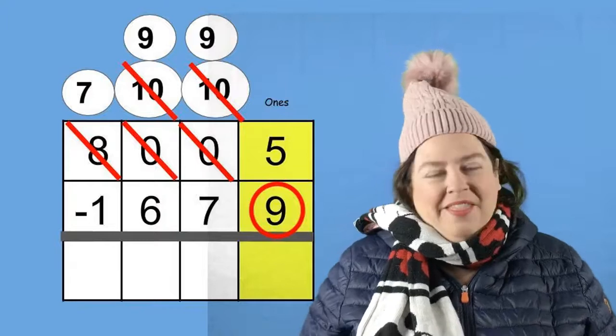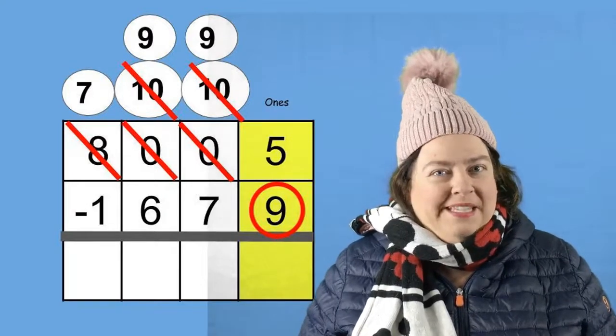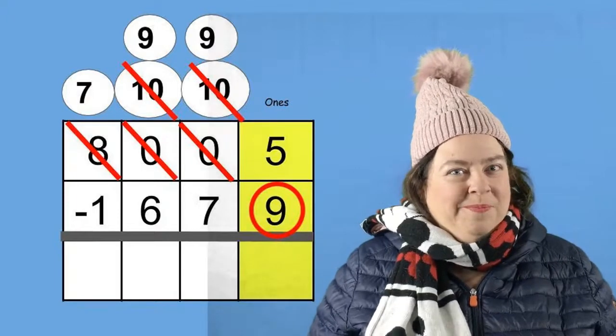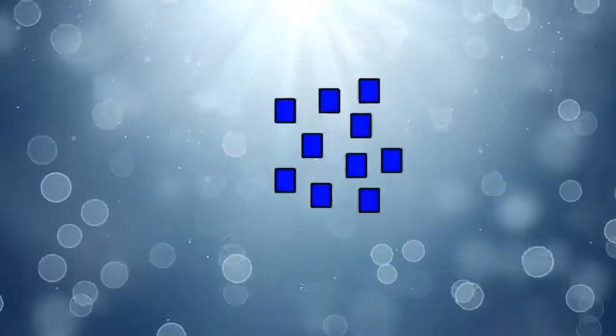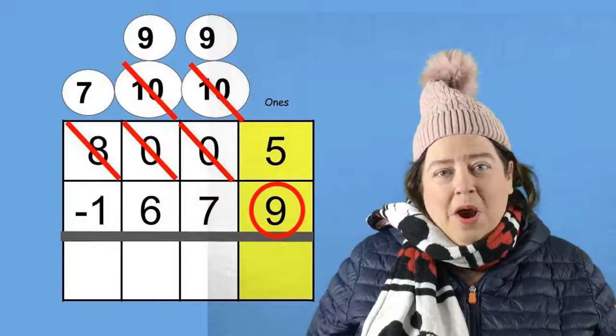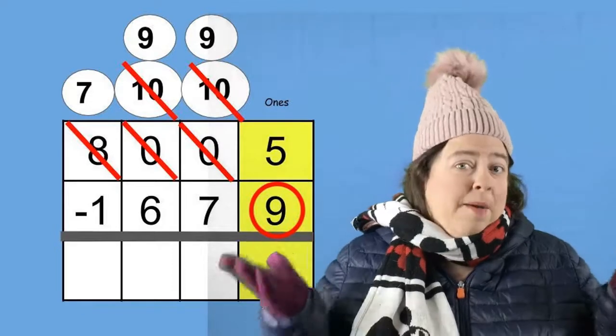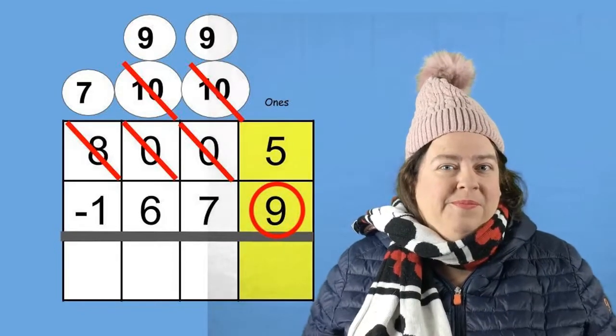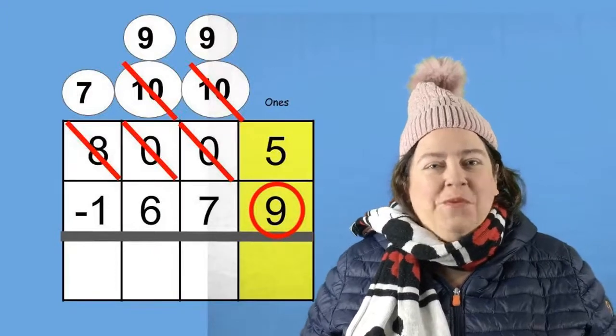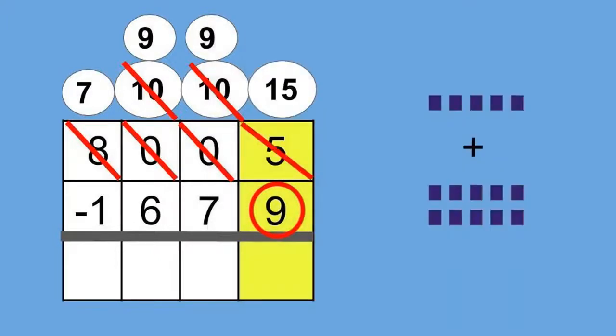And now we're going to break apart that ten and make it into how many ones? Let's try it and see. Now that I broke it apart, I now have ten plus five ones. So how many ones is ten plus five? That's right. We now have fifteen ones. Here's a picture of what it looks like using place value blocks. We started off with five ones and then we added ten ones when we regrouped. Five plus ten equals fifteen, which is what you see in the snowball in the ones place.